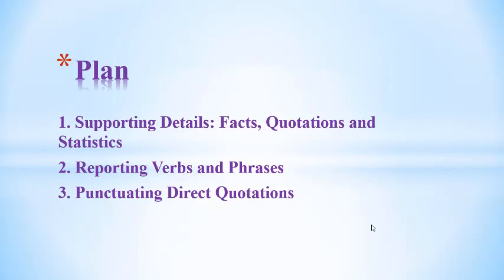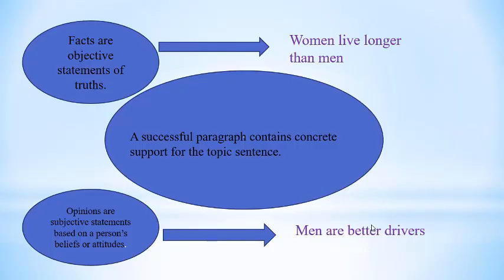In persuasive texts, when the author is doing his best to persuade the reader to think in a specific way or do something, he will make a point and then support those points to make the reader think or act in the way he wants. Supporting details may often be easily spotted because authors will signal them with words like first, second, finally, for instance, or for example, indicating that another supporting detail is coming.